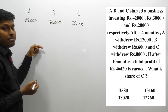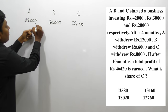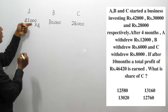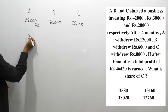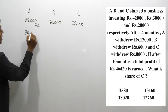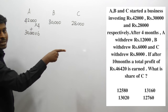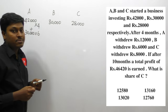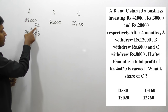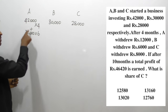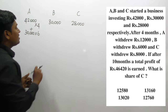For the first 4 months, A invests 42,000. After withdrawing 12,000, the remaining is 30,000, which A invests for the remaining 6 months. So A's investment = 42,000 × 4 + 30,000 × 6.